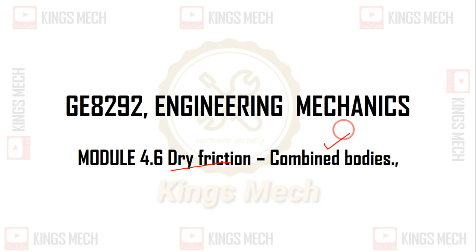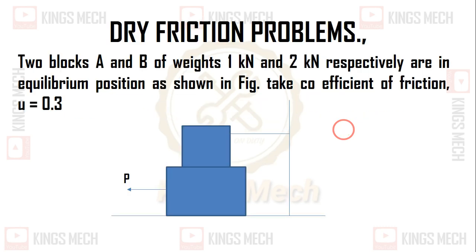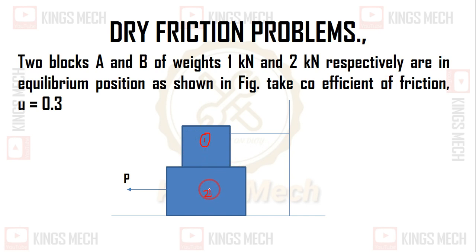So, let us go to the video now. Consider these two blocks. This is block number 1 and this is block number 2. The first block weight is 1 kN and the second block weight is 2 kN.